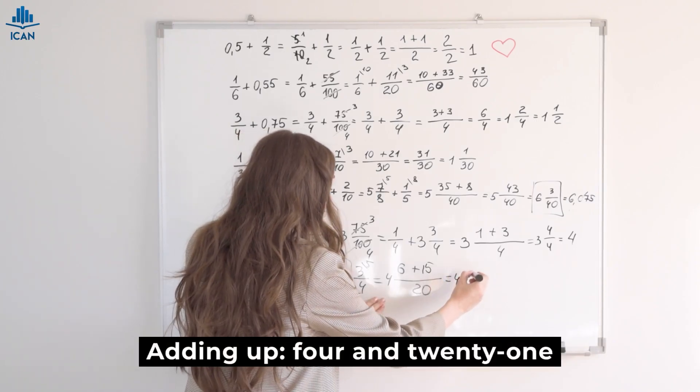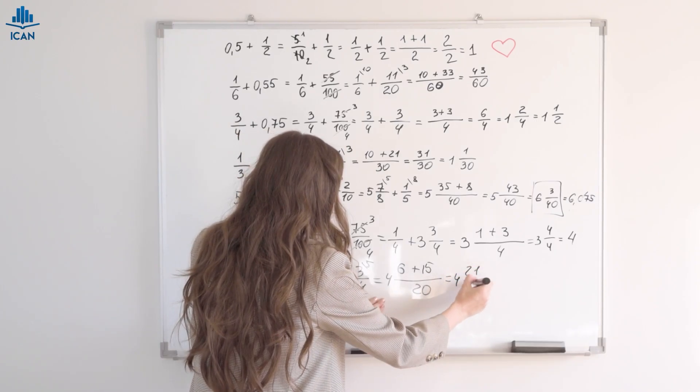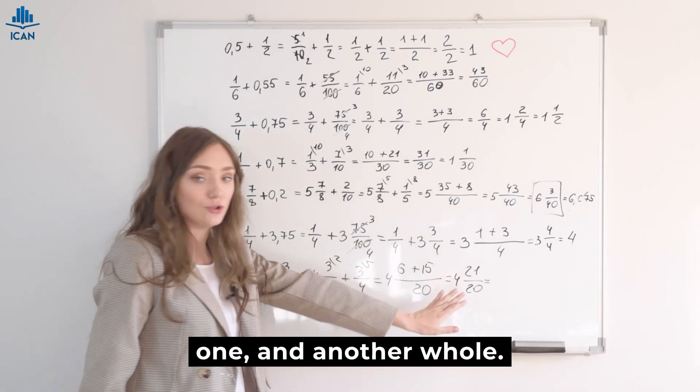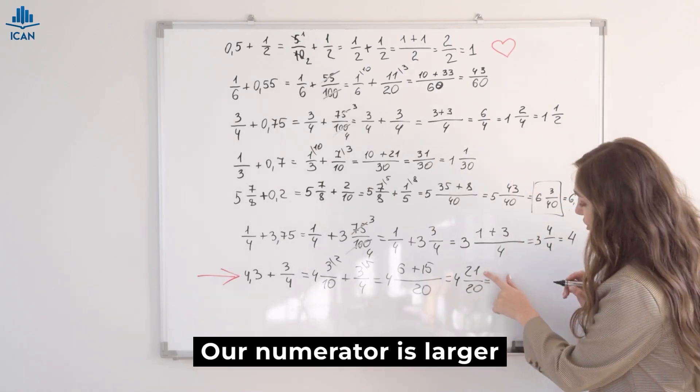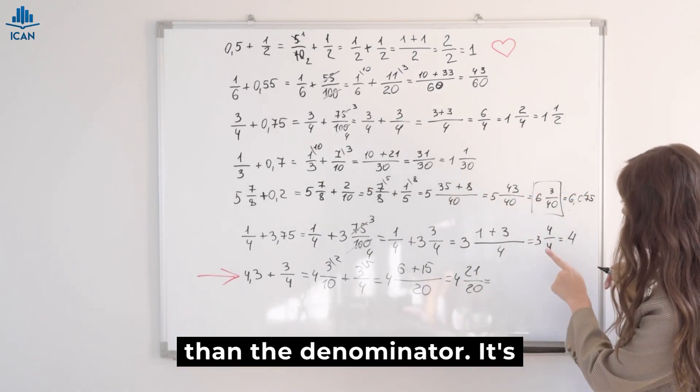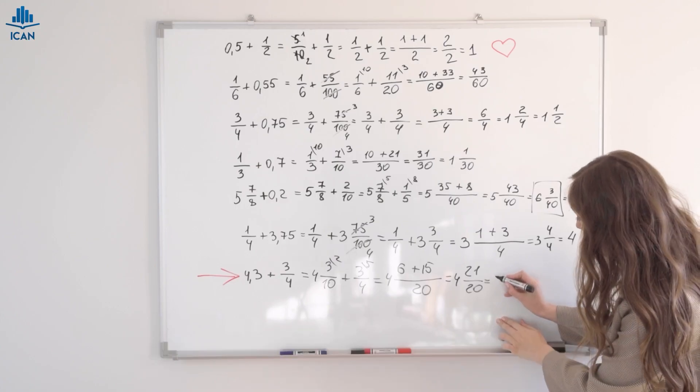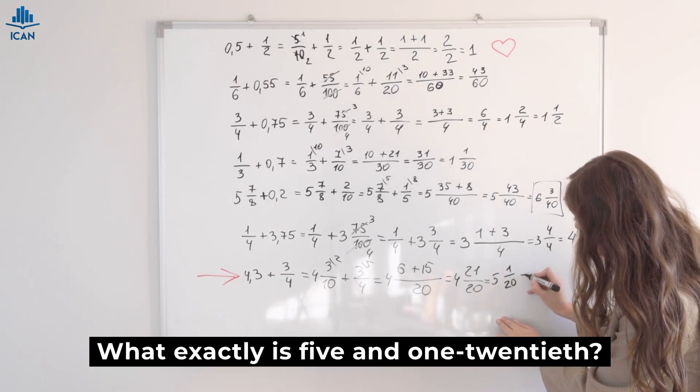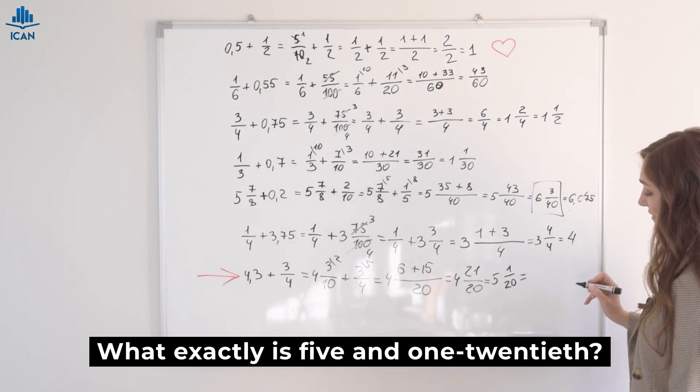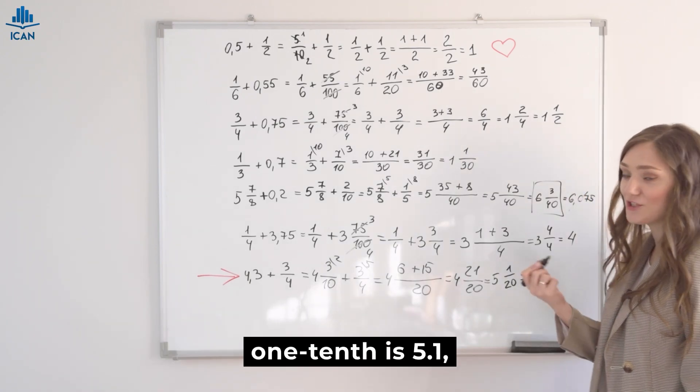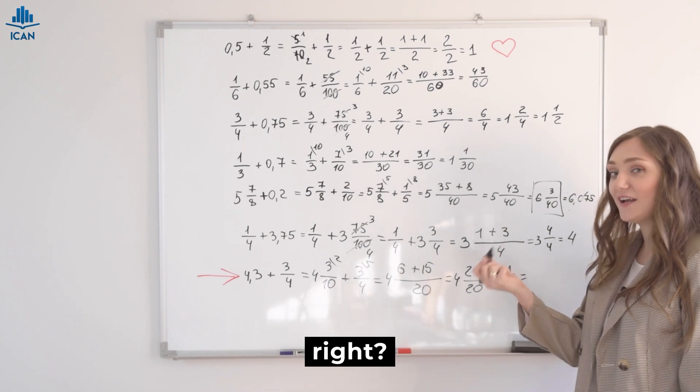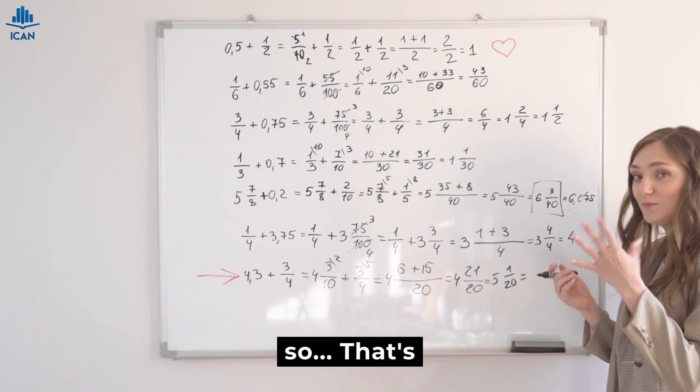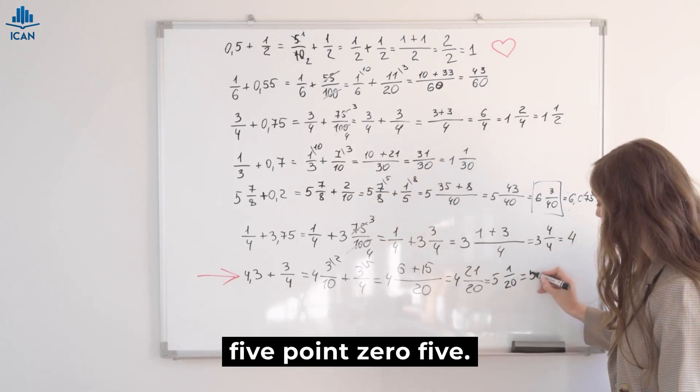Adding up. Four and twenty-one-twentieths. Of course, we single out one and another whole. Our numerator is larger than the denominator. It's like what we had here before, right? We get five and one-twentieth. What exactly is five and one-twentieth? Well, five and one-tenth is 5.1, right? And one-twentieth is half of that. So that's 5.05.